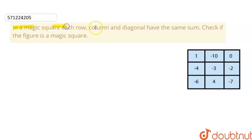In a magic square, each row, column and diagonal have the same sum. Check if the figure is a magic square.